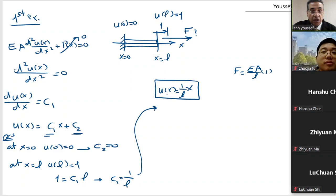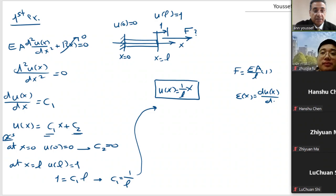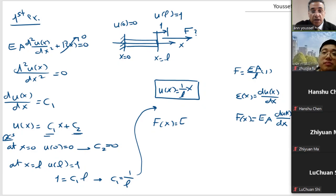Anyone working with finite elements will recognize this as the shape function. The strain epsilon(x) equals du(x)/dx, and the force f(x) equals EA times du(x)/dx. So directly, I can get the force f(x) equal to EA times du(x)/dx, which is EA times 1 over L. So this is the force.